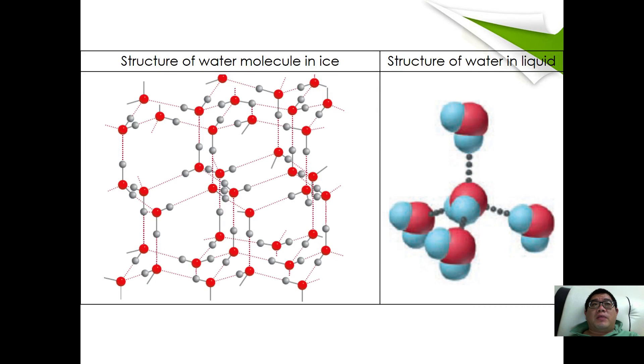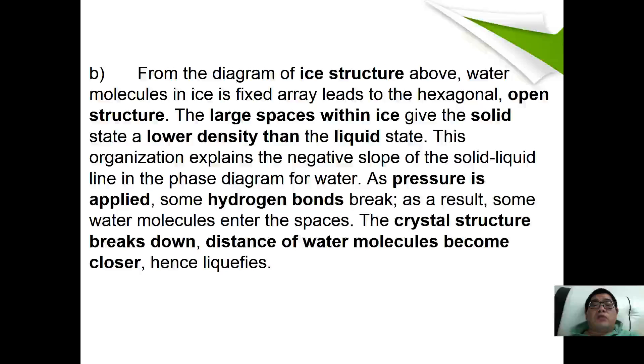So how are you going to explain the phenomenon of a phase diagram as the pressure increases? From the diagram of ice structure above, water molecules in ice fixed array exist in a tetrahedral hexagonal open structure. The large space within ice gives the solid a lower density than liquid. This organization explains the negative slope of the solid-liquid line in the phase diagram of water.